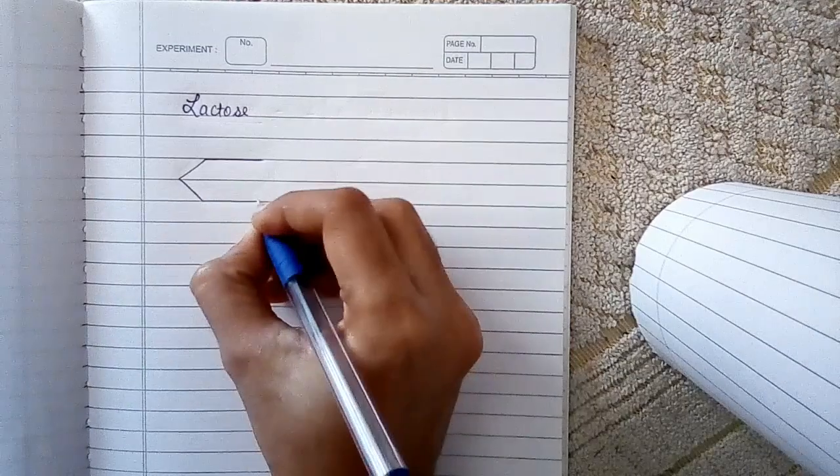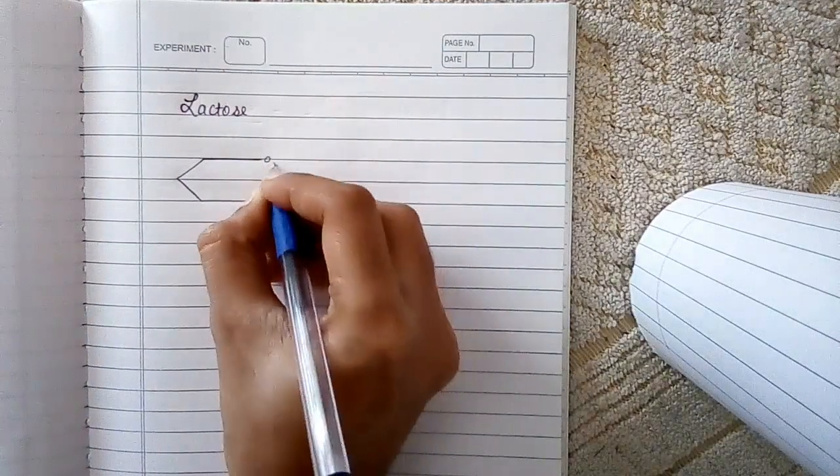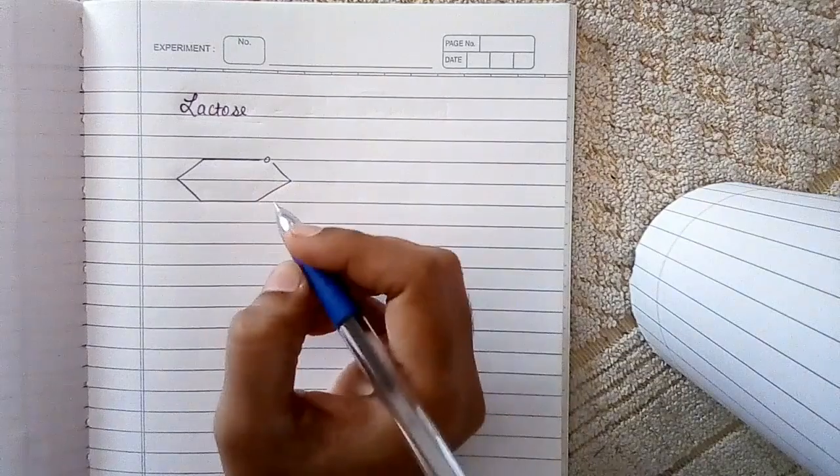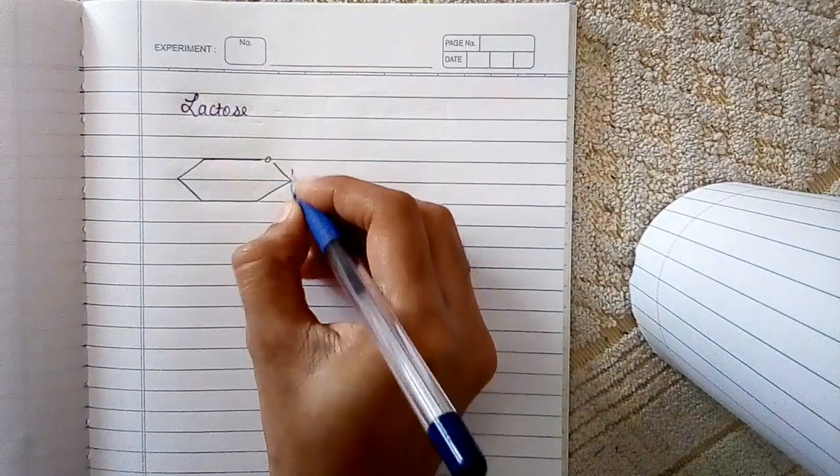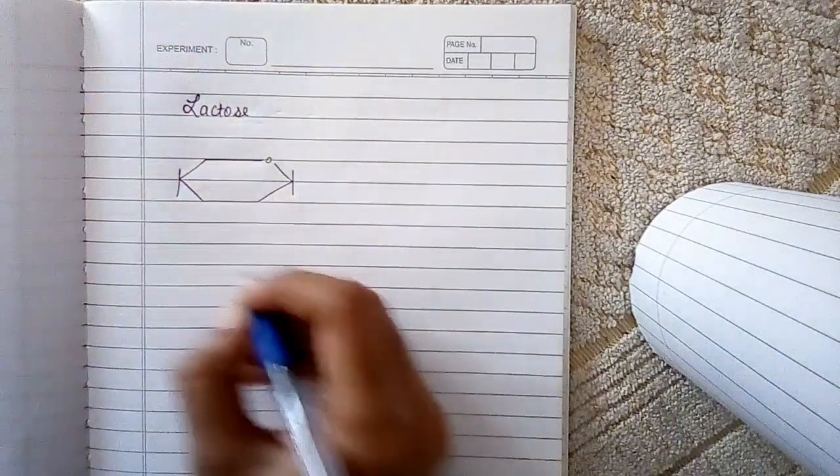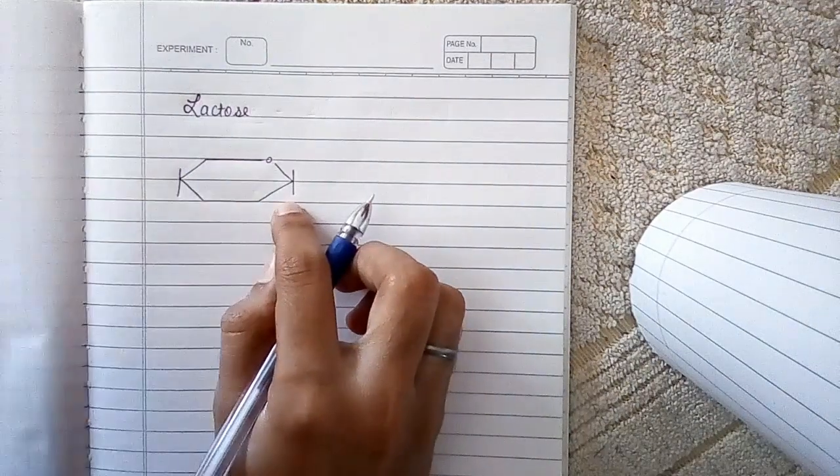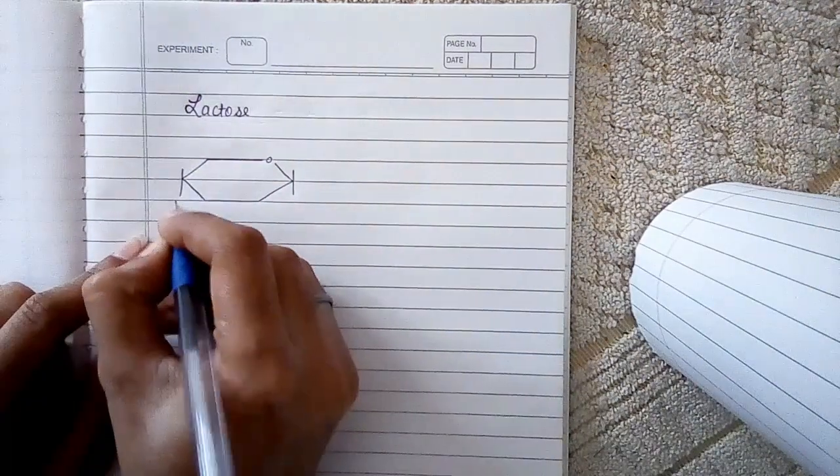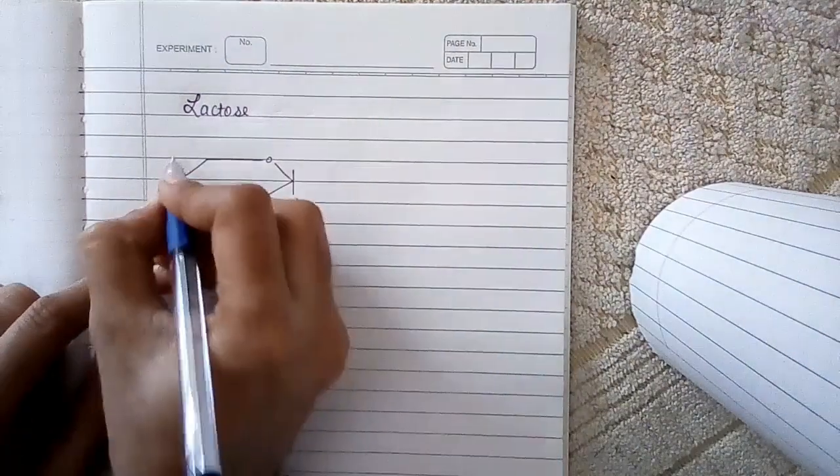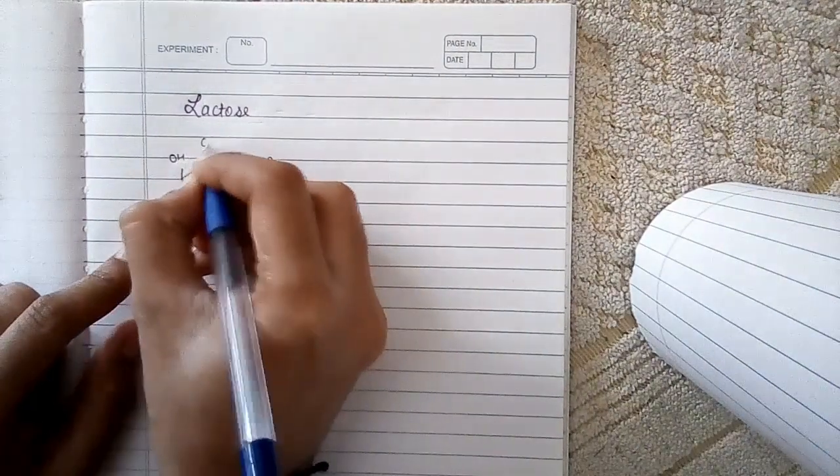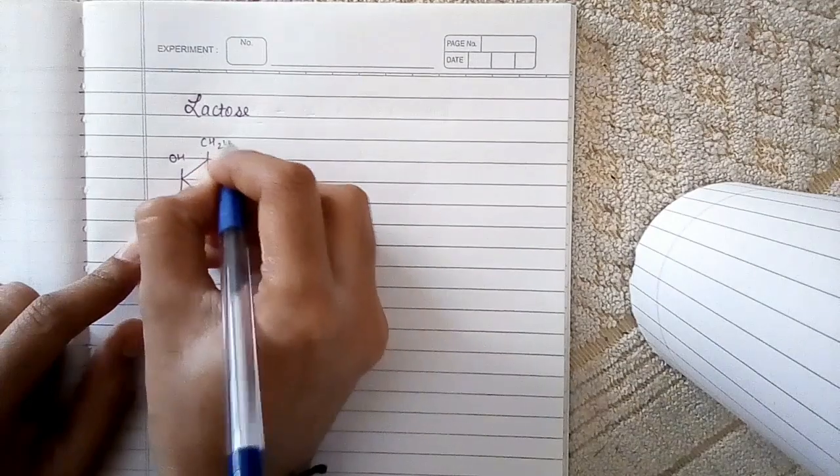See, this is our iron. So the difference in glucose and galactose is that in glucose we have OH and OH at these places, but in galactose we have H and H at these places. Okay, so remember that. And all other things are similar.